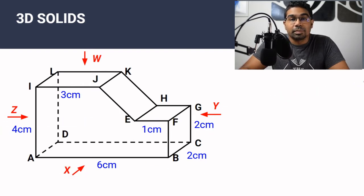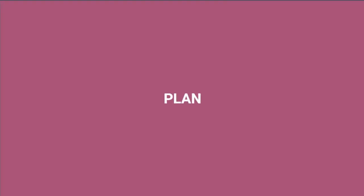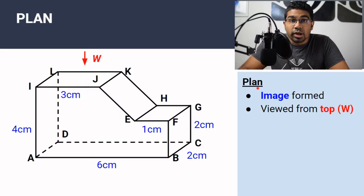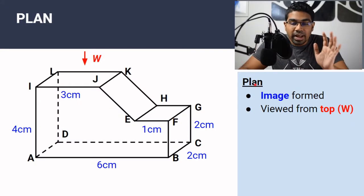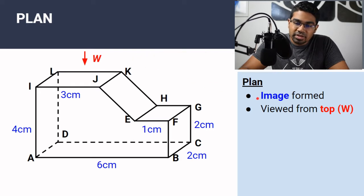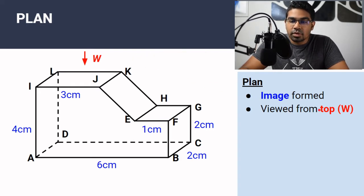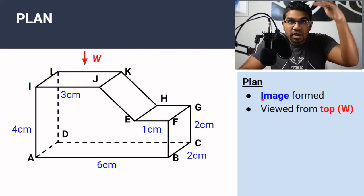Let's look at what a plan is. A plan is actually a drawing. Plan and elevations are drawings. A plan is a drawing, an image that is formed when the object is viewed from the top, from above.